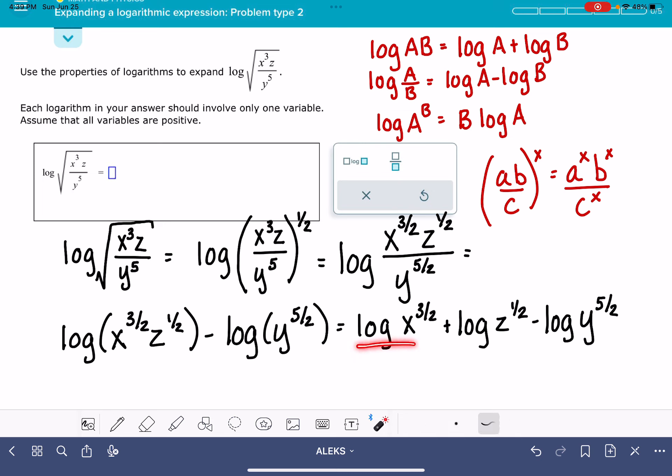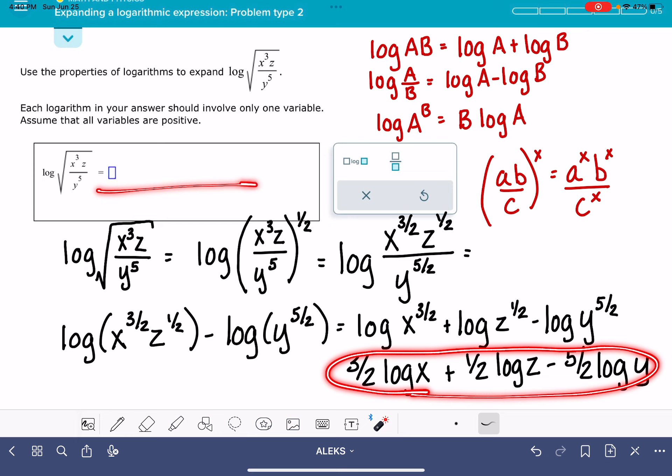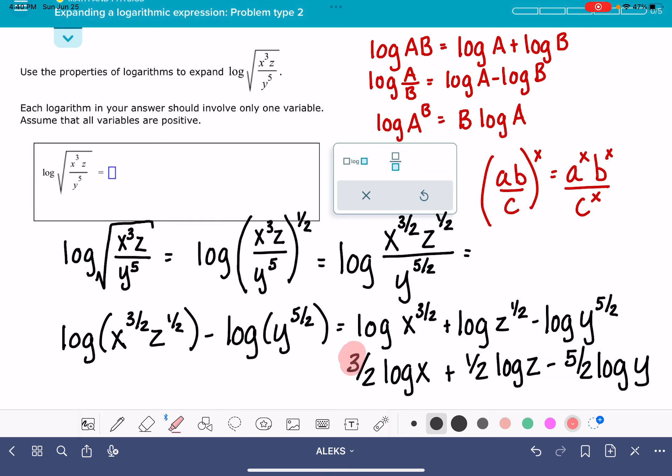The last thing that we're going to do is simplify all of this using this principle. If we have the log of something to the exponent, we can take that exponent out and put it up front. We can do that with all three of these terms. And this is what ALEKS wants us to do. Three halves times the log of X, plus one half times the log of Z, minus five halves times the log of Y. This is the simplified version. The answer to the problem is this expression right here.